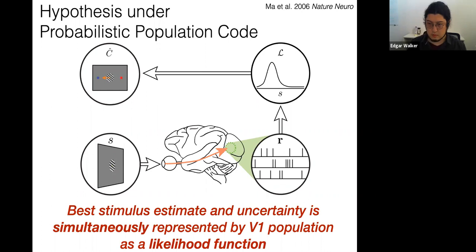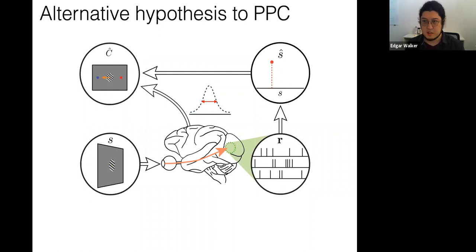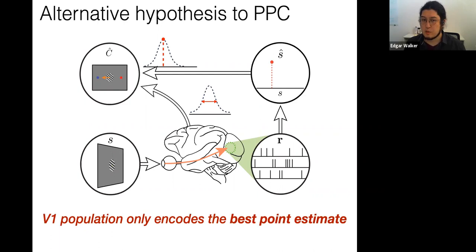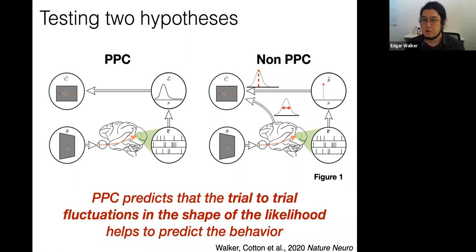Under the theory of Probabilistic Population Code (PPC), a population of sensory neurons simultaneously captures both the best stimulus estimate and associated uncertainty by representing the likelihood function, which can then be decoded by downstream brain areas to arrive at decisions and behavior. In an alternative hypothesis, the V1 population only encodes the best point estimate of the stimulus, and uncertainty information may be captured through a completely independent path that is only combined downstream. It is only under the PPC model that we expect trial-by-trial fluctuations in the shape of the decoded likelihood function to carry uncertainty information that predicts the subject's trial-by-trial behavior.